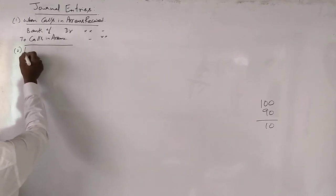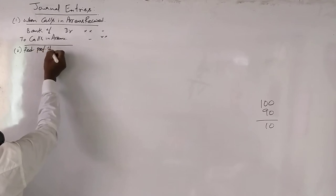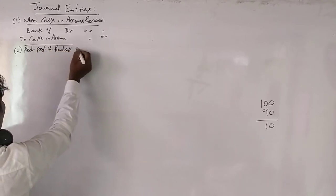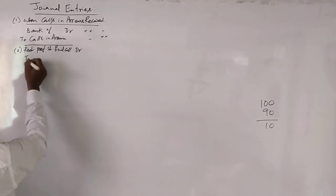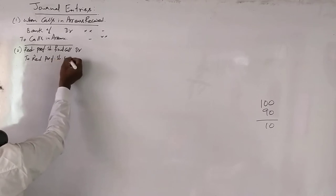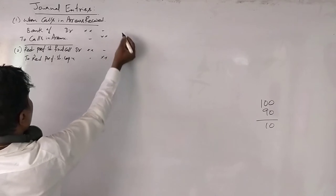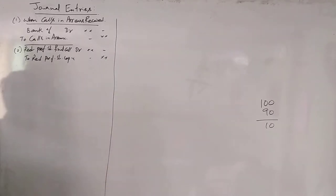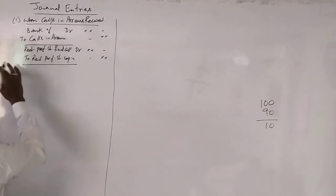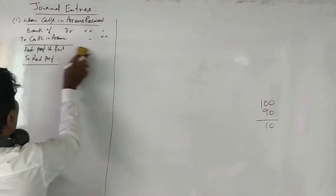The first entry under the situation of call money made and received is: redeemable preference share final call account debit to redeemable preference share capital account — showing the amount is due.